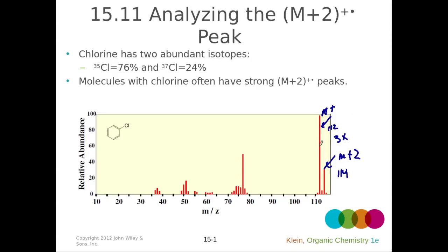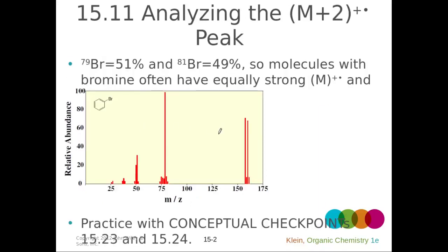If we have this 3:1 ratio, that's a characteristic pattern indicating our molecule has a chlorine. Notice that 112 minus 35 (for Cl-35) equals 77, and 114 minus 37 (for Cl-37) also equals 77 — which is what we have left in this molecule: a phenyl group.